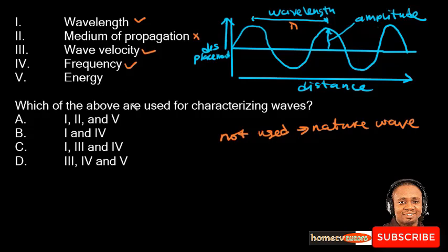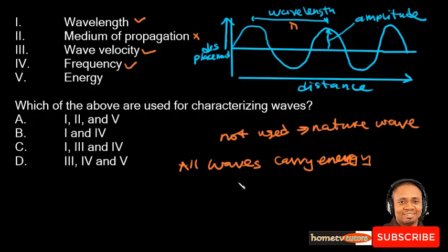Lastly, energy — all waves carry energy, and sometimes this energy could be felt, like an earthquake could shake a whole city. But energy is not used for characterizing waves. Wave is a common term for a number of different ways in which energy is transferred. So looking at the options, the ones used for characterizing waves are 1, 3, and 4. Option C is the right answer. Thank you for watching.